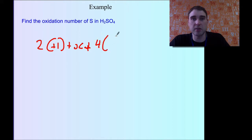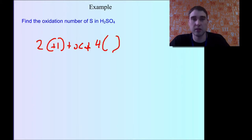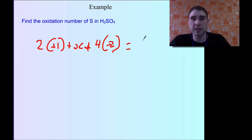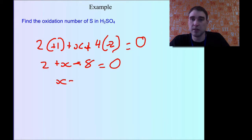Plus 4 oxygens: 4 times the oxidation number of oxygen. The oxidation number of oxygen is always minus 2, unless it's in a peroxide — and that's not the case here — so 4 times minus 2. That has to equal the charge on the complete molecule. There's no charge, so it equals 0. Solving: 2 plus X minus 8 equals 0. So 2 minus 8 is minus 6, meaning X minus 6 equals 0, so X equals plus 6.